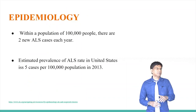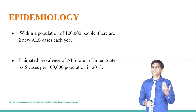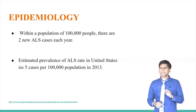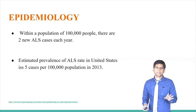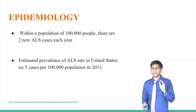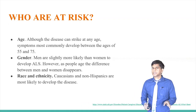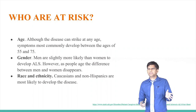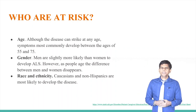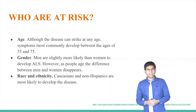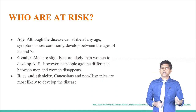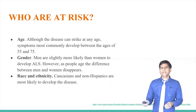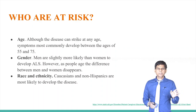In terms of epidemiology, within a population of 100,000 there are two new ALS cases each year. It is rare, and the estimated prevalence in the United States is five cases per 100,000. Risk factors include age — typically 55 to 75 — gender, with men slightly more likely than women, and race/ethnicity, with Caucasian non-Hispanics most likely to develop the disease.